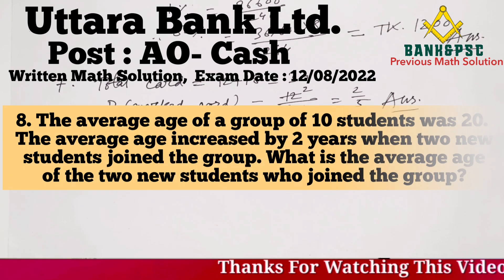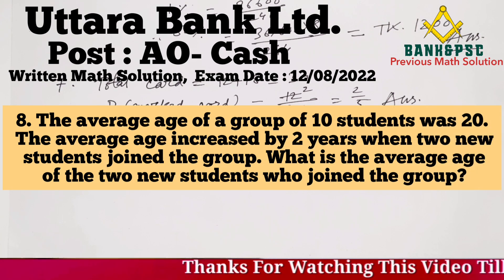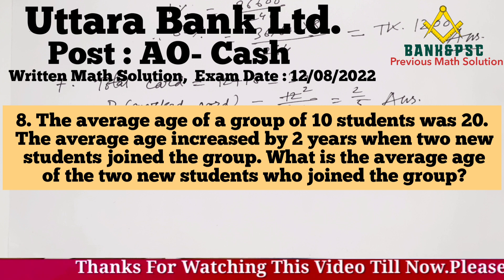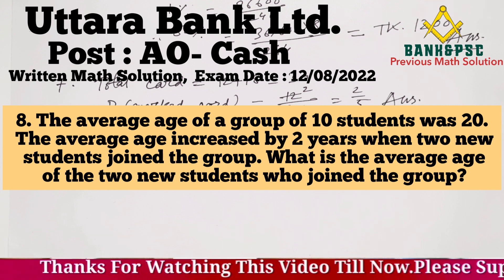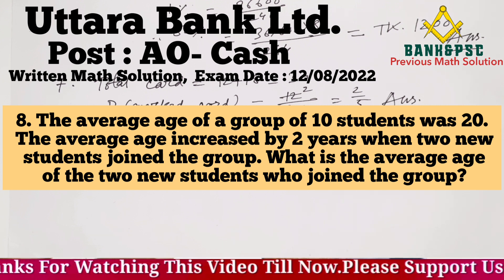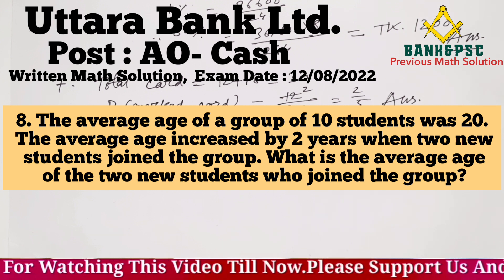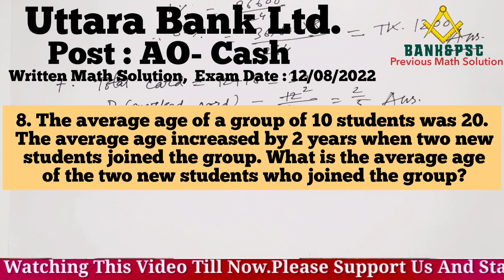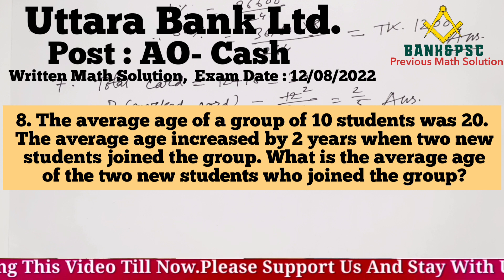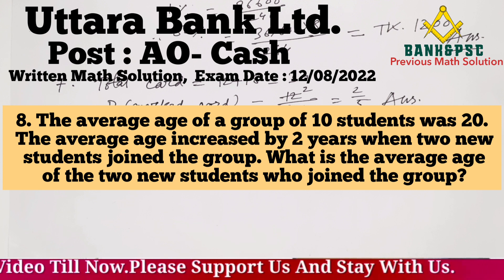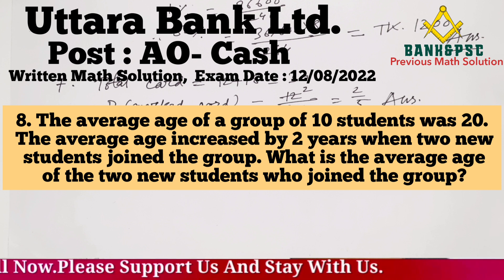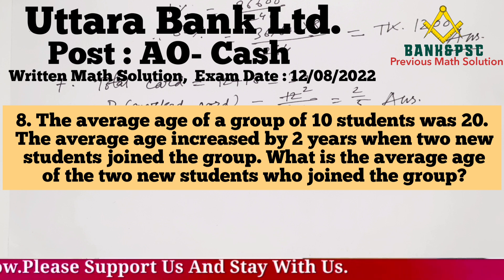Question 8: The average age of a group of 10 students was 20. The average age increased by 2 years when 2 new students joined the group. What is the average age of the 2 new students who joined the group?